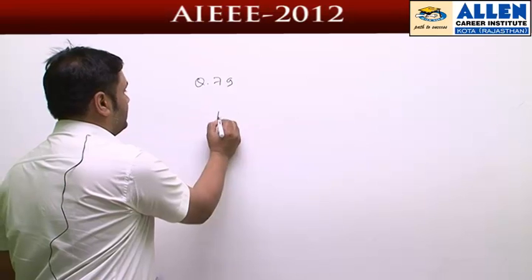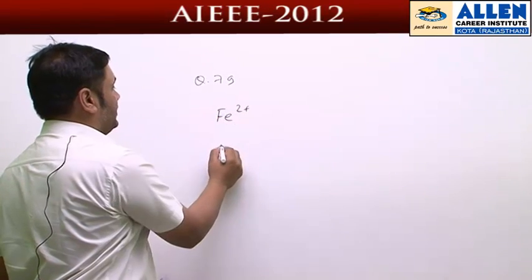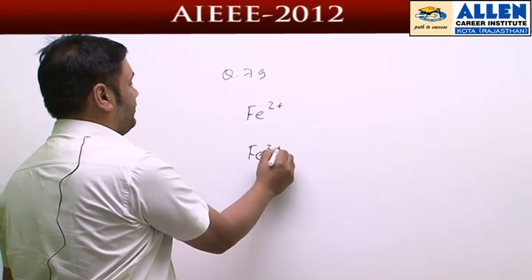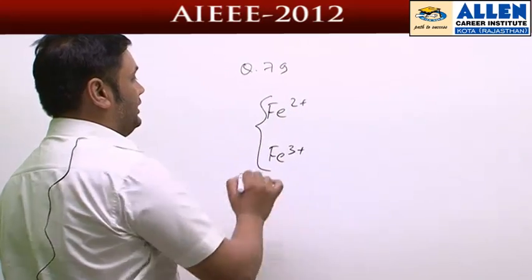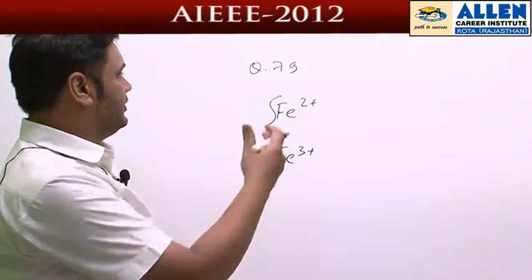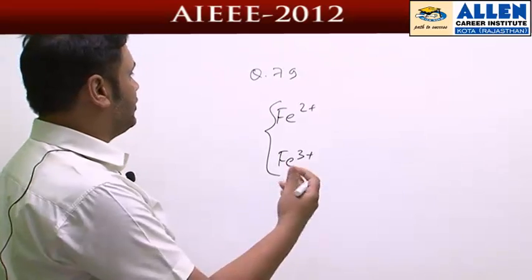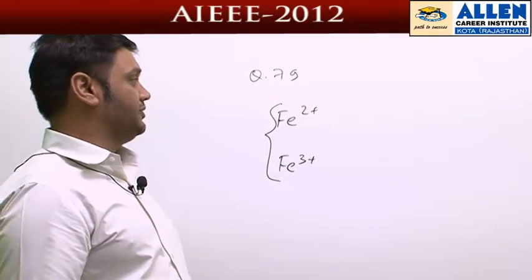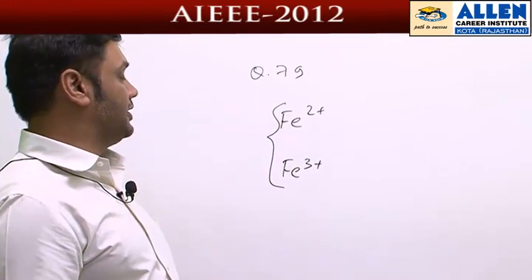The ferrous ion and ferric ions have different ionic potentials - that is, they have different power in terms of polarizing the anions and molecules like H2O.